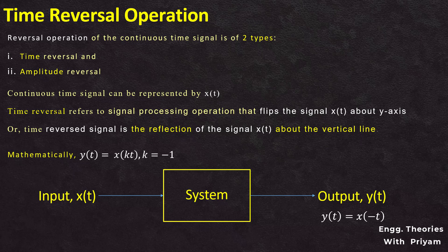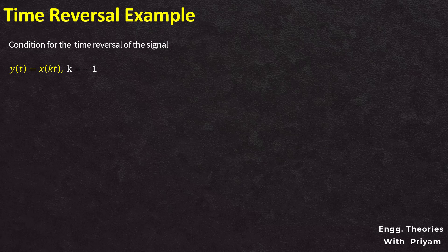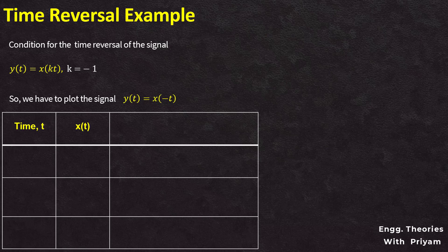Let's see an example to understand this time reversal operation. The condition for the time reversal operation of the signal x(t) is y(t) = x(kt) where k = -1. So we have to plot the signal y(t) = x(-t). We will make a table for observing the different values of the signal x(t) at different time instants.